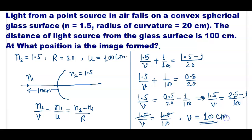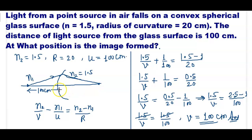This is our answer. V equals 100 cm, which means the image is formed at 100 cm in the direction of the incident ray.